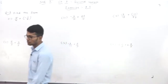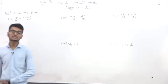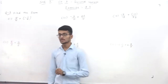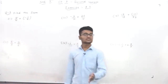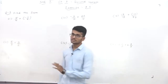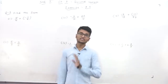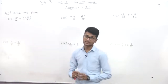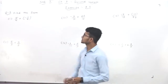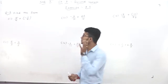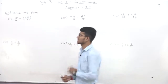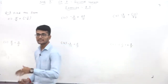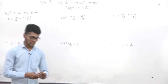In Exercise 9.2, the first question is to find the sum — that means addition of rational numbers. This exercise also covers subtraction, multiplication, and division of rational numbers. So our first question is to find the sum, meaning addition of the given rational numbers.